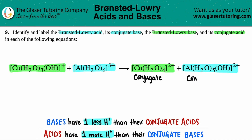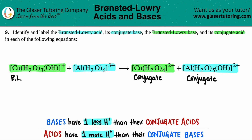This is also a conjugate something. Likewise, on the reactant side, these are your actual Brønsted-Lowry acids and bases — Brønsted-Lowry something and Brønsted-Lowry something. Now we're going to figure out which one is the acid and which is the base by analyzing the pairs. Let's just remember that acids always have one more hydrogen than their conjugate base, and bases will have one less hydrogen.